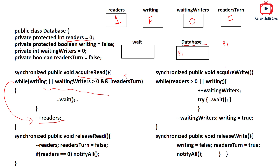While R1 is reading, suppose writer W1 wants to acquire write on the database. W1 calls acquire_write and checks: while reader count is greater than zero — yes, it is one, so true — or writing is false. True or false gives true, so W1 increments waiting_writers to one and waits. Now R1 is reading and W1 is waiting.